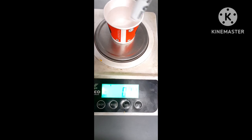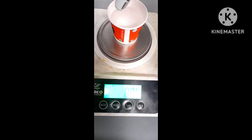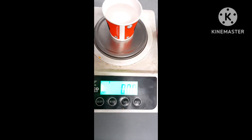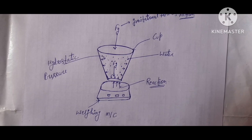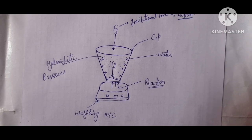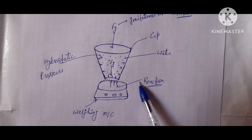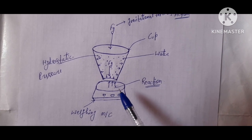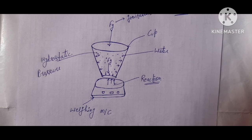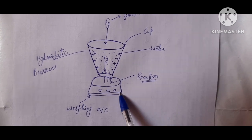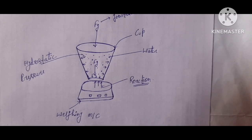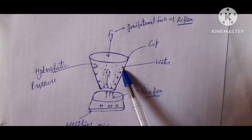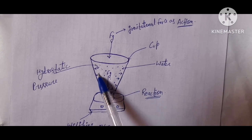If this board marker goes inside the water, the value increases because the total action of the board marker, cup, and water has an equal and opposite reaction measured by the weighing machine. So the weighing machine measures the reaction of an object, not its actual weight.